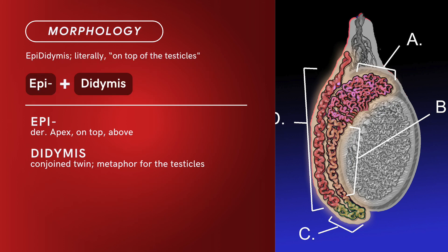Term morphology — epididymis literally means 'on top of the testicles.' Compound of epi and didymis. Epi is derived from apex, meaning 'on top of' or 'above.' Didymis means 'conjoined twin' — a metaphor for the testicles. There you have it: compound term, epididymis.